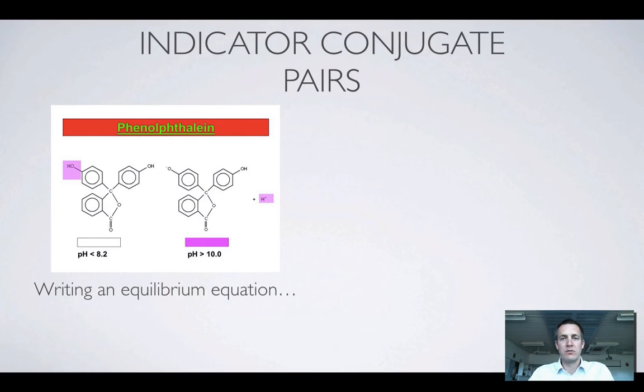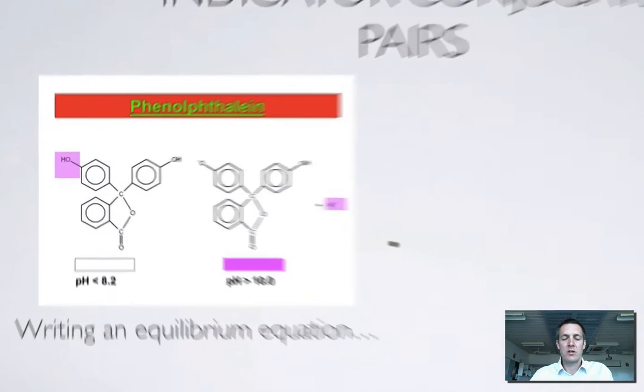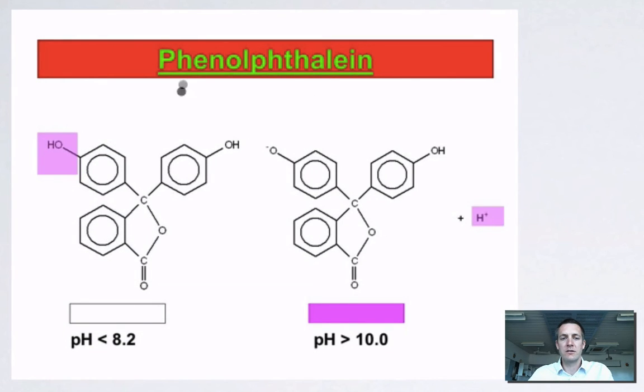But what is important to realize is that indicators in their two different colored forms basically exist as a conjugate pair. Here we've got a well-known indicator, phenolphthalein, and it has two different colors as you might have seen on that previous table.